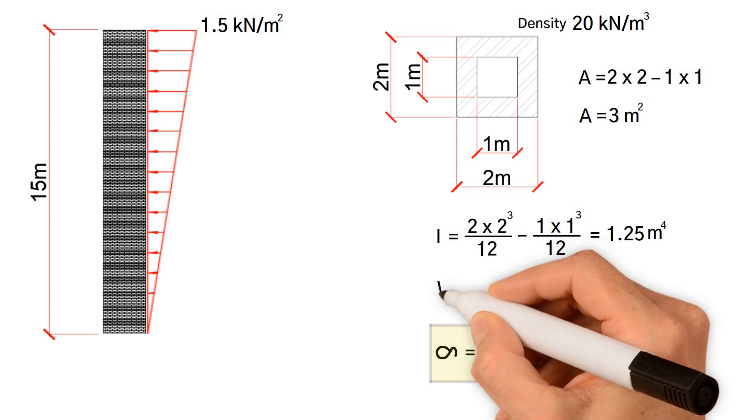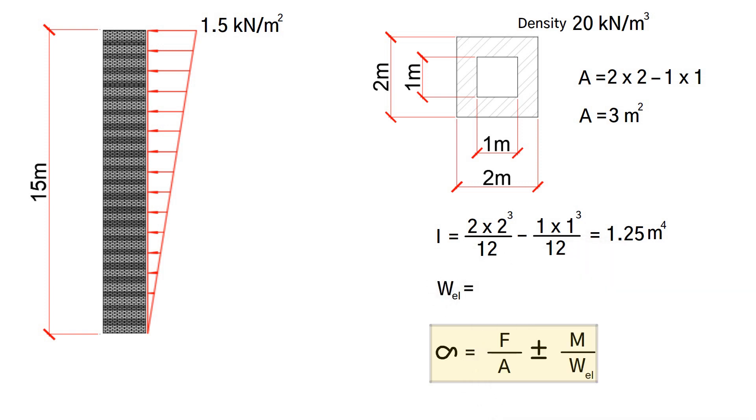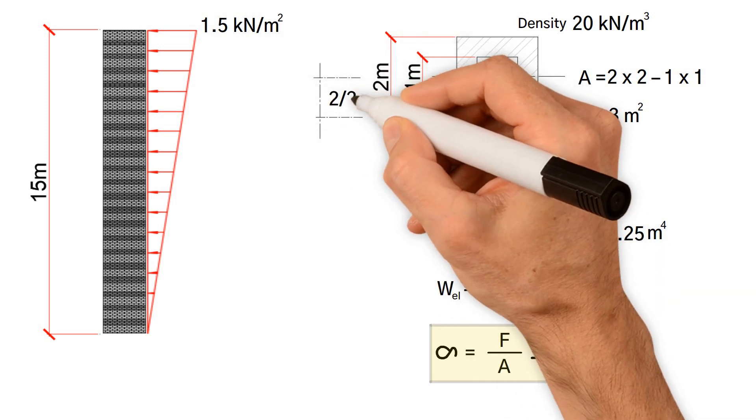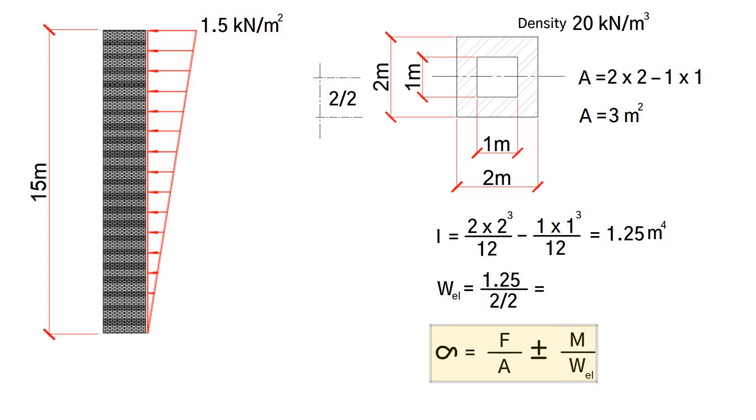Therefore, the elastic modulus equals the area moment of inertia of the subtracted shape, 1.25, divided by half of the depth, 2 meters over 2. This gives us the value of 1.25 meter cubed.